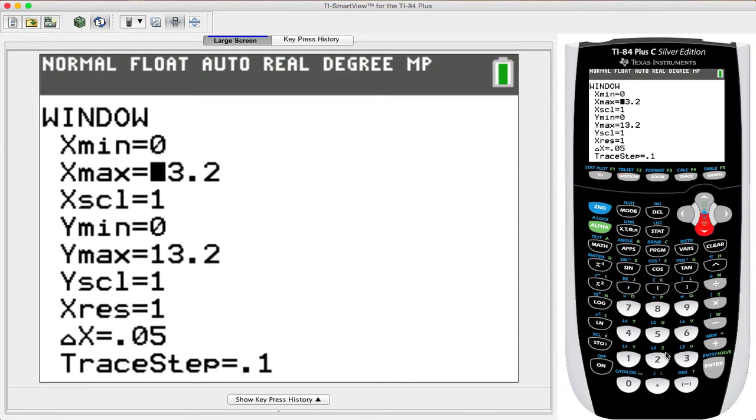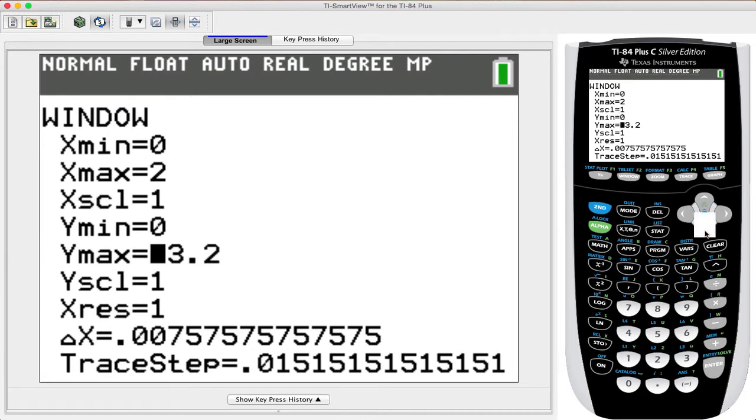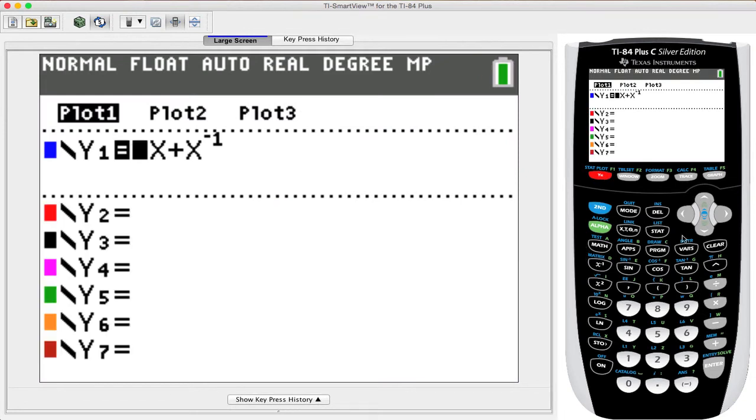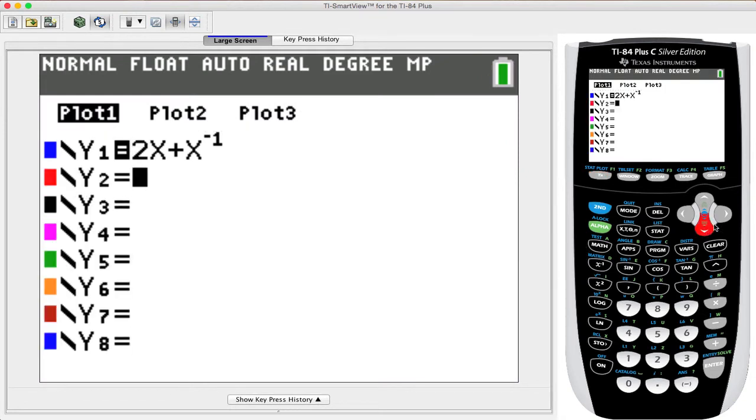So let's change the window so the max x value is 2 and the max y value is 4. And then again, let's take a look at the graph. So there it is zoomed in. Now let's go ahead and add in the equation for the tangent line, and that was x + 2.